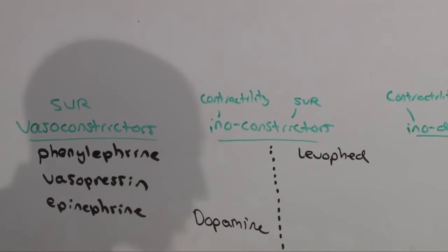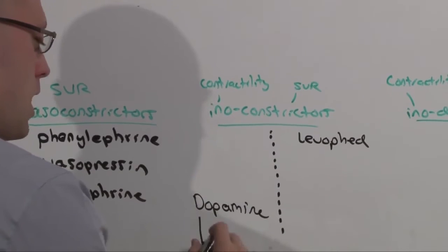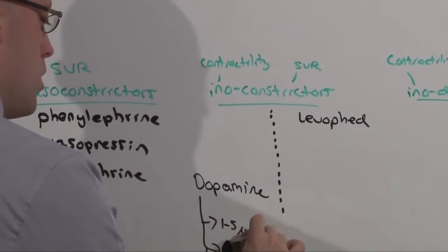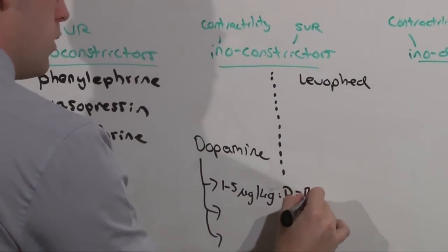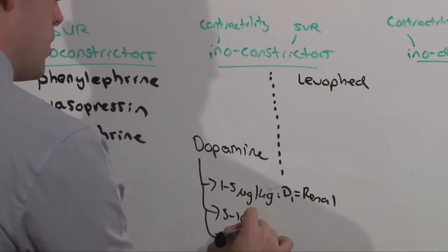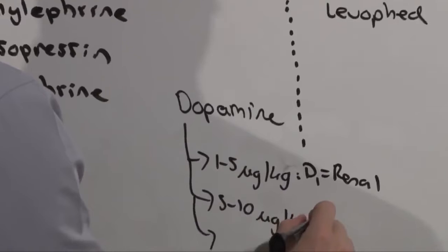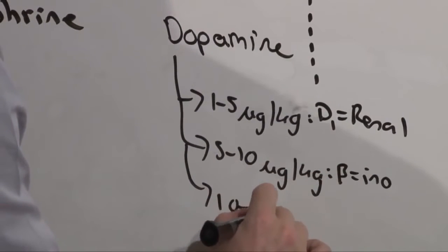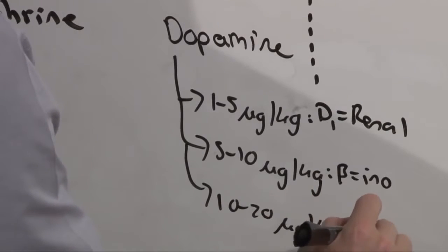Now, if you learned about dopamine, you learned that there were three classifications. At doses of one to five micrograms per kilo, you get D1 receptor activity, which equals renal. Between five and ten mikes per keg, you are getting primarily beta, and that's inotropic. And at ten to twenty mikes per keg, that's alpha, and that was a constrictor.